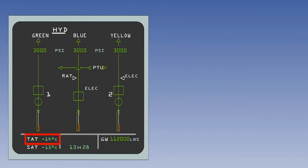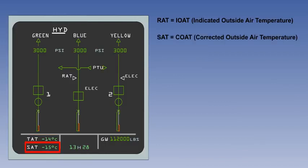Theoretically, uncorrected air temperature gauges give ram air temperature, not total air temperature. However, in many aircraft, the gauge is incorrectly labelled TAT. What you see on the gauge is sometimes called indicated outside air temperature, or IOAT. OAT, on its own, stands for outside air temperature and is usually taken to mean SAT.